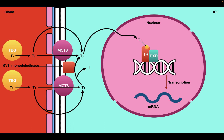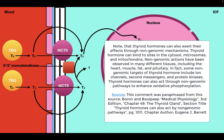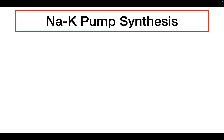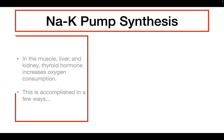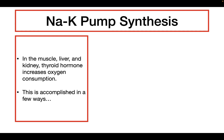It's going to modulate the genetic expression of different genes. So now that we know the genomic pathway of thyroid hormone, let's talk about the metabolic effects. The first effect is that thyroid hormone can have effects on the synthesis of the sodium-potassium pump. Inside the muscle, the liver, and the kidney, thyroid hormone can actually increase the level of oxygen consumption, primarily by modulating the synthesis and activity of the sodium-potassium pump.